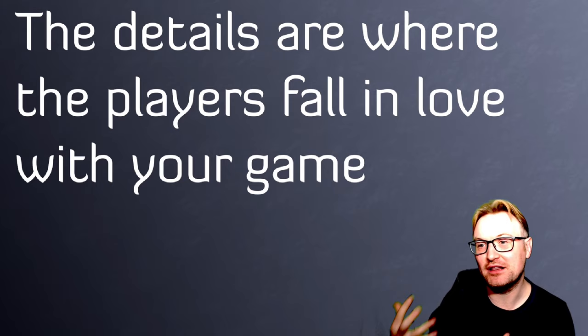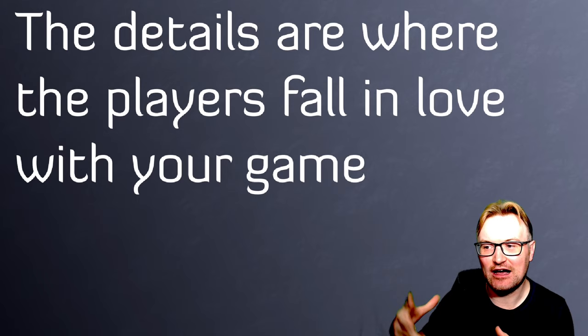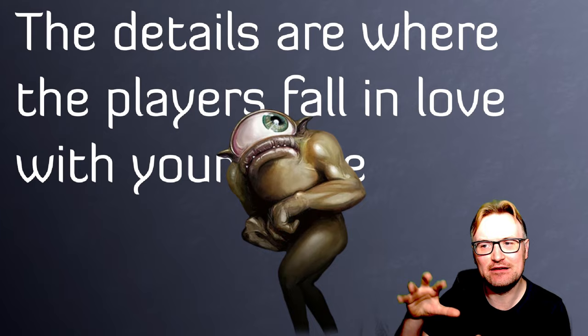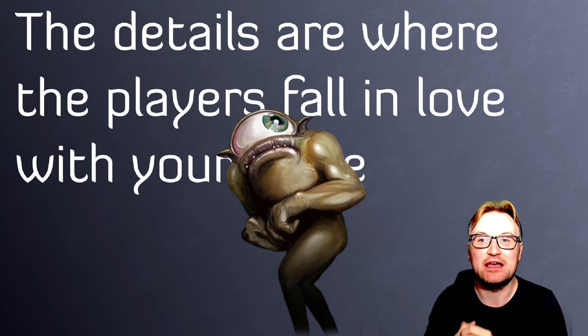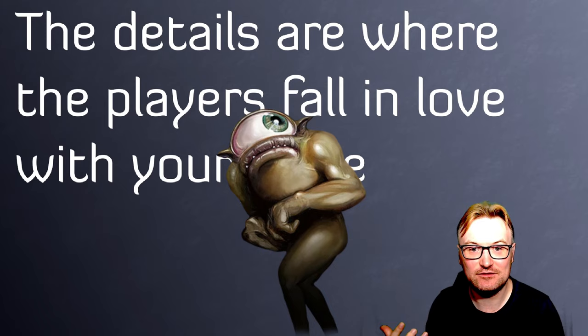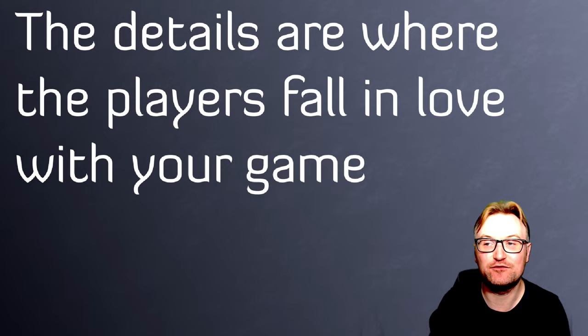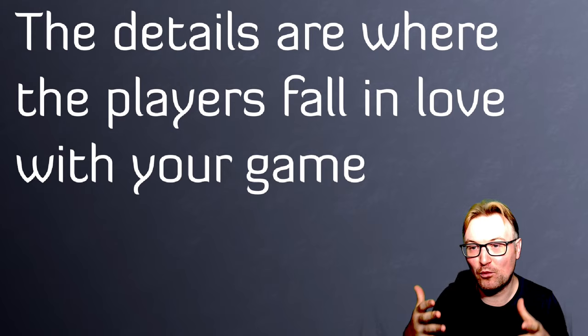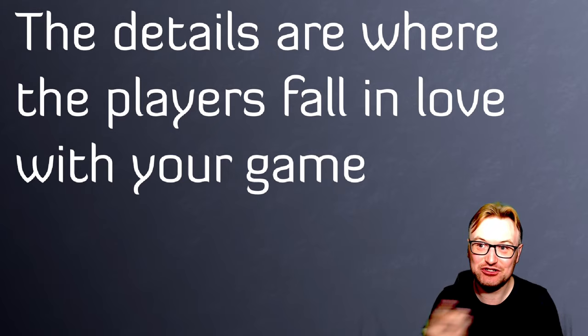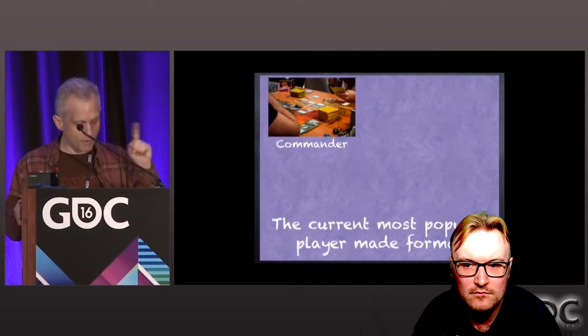Lesson eight: the details are where players fall in love with your game. Mark uses an example of a character called Fblthp — this little homunculus people started putting everywhere: in Renaissance paintings, memes, little toys. If people love that thing, lean into it. If a small aspect of the game is getting a lot of attention and people find it funny, add more to it. Give the players what they want. It ties back into not fighting human nature.